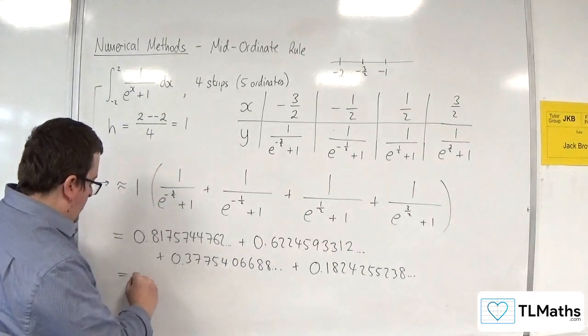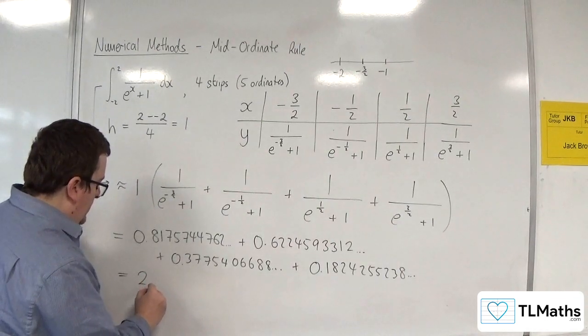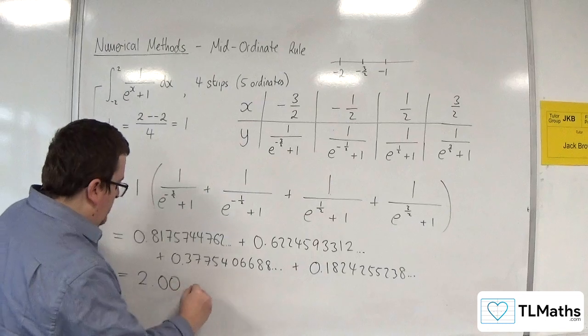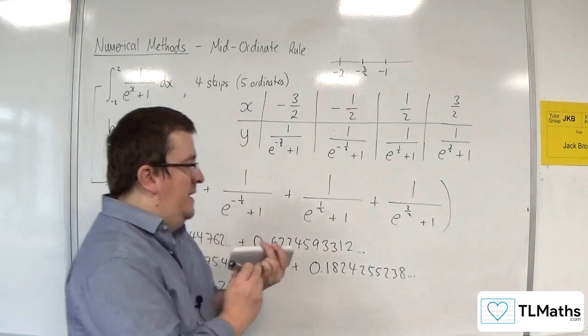Now, I find it unlikely that it's going to be exactly 2, because we're just estimating the curve here. So I'm going to write it as 2.00 to 3 significant figures.